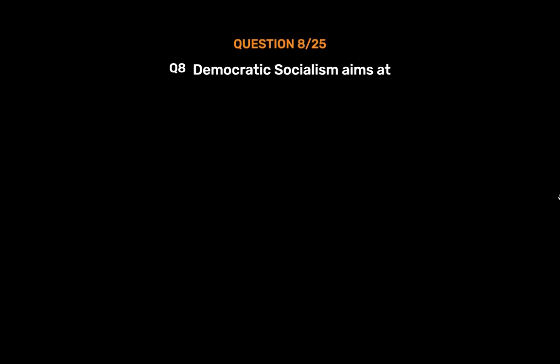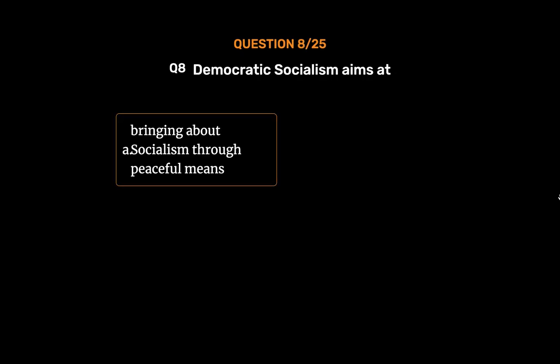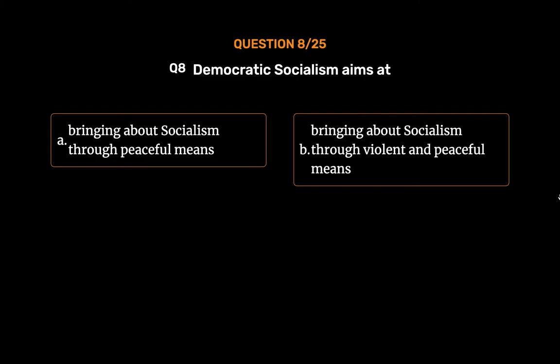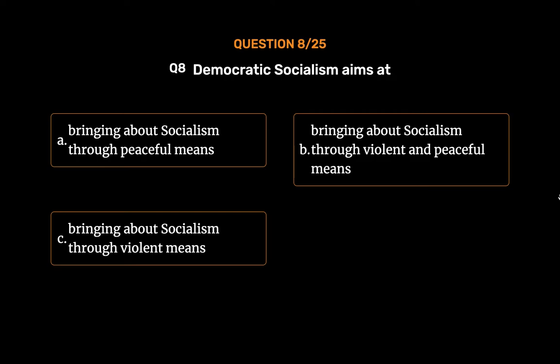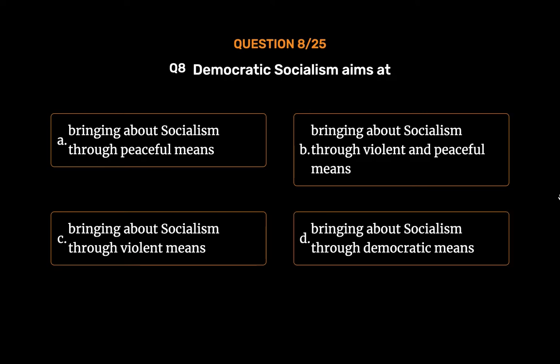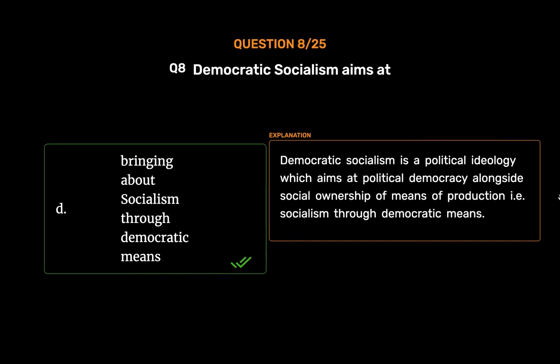Question No. 8: Democratic socialism aims at — Option A: Bringing about socialism through peaceful means, Option B: Bringing about socialism through violent and peaceful means, Option C: Bringing about socialism through violent means, Option D: Bringing about socialism through democratic means. The correct answer is Option D, bringing about socialism through democratic means. Democratic socialism is a political ideology which aims at political democracy alongside social ownership of means of production, i.e., socialism through democratic means.